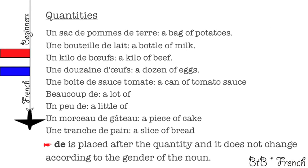Quantities. Un sac de pommes de terre. Une bouteille de lait. Un kilo de bœuf. Une boîte de sauce tomate. Beaucoup d'œufs. Un peu d'œufs. Un morceau de gâteau. Une tranche de pain. In each of these quantities, you should see they all have de. De is placed after the quantity and it does not change according to the gender of the noun.